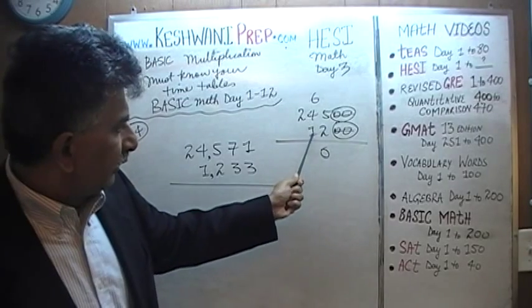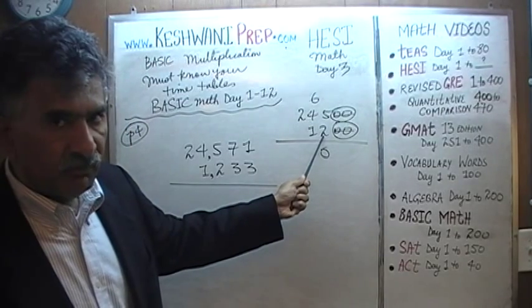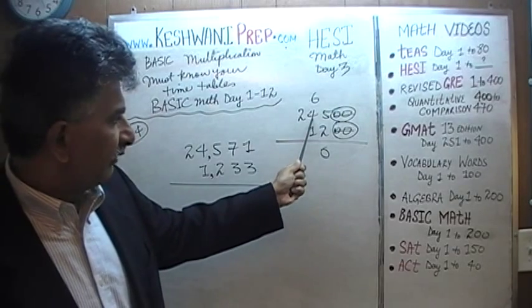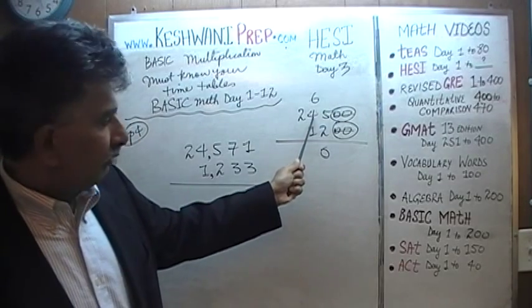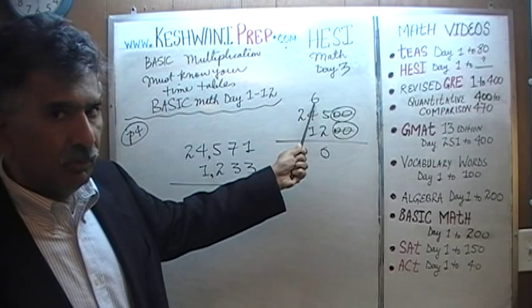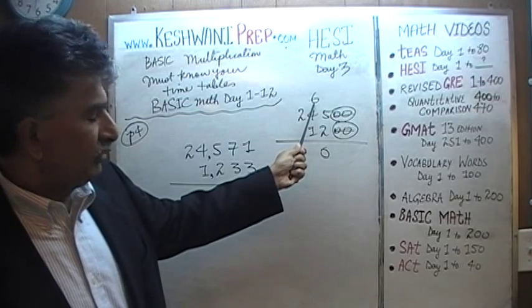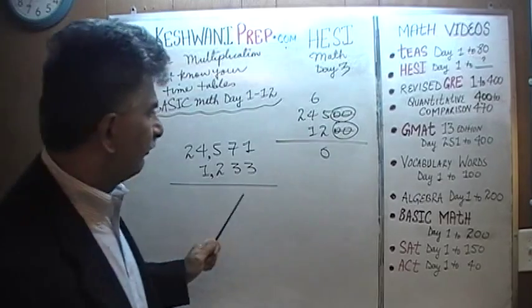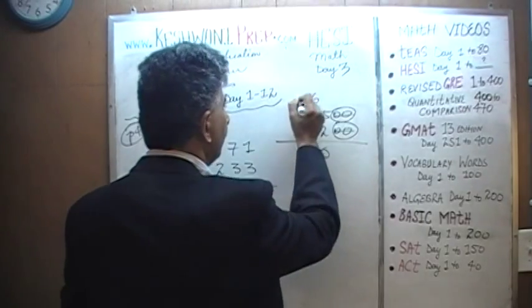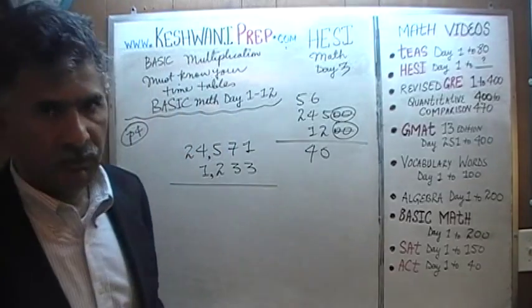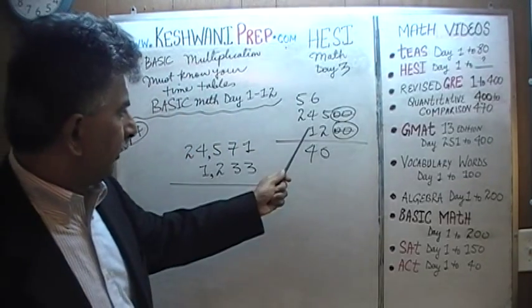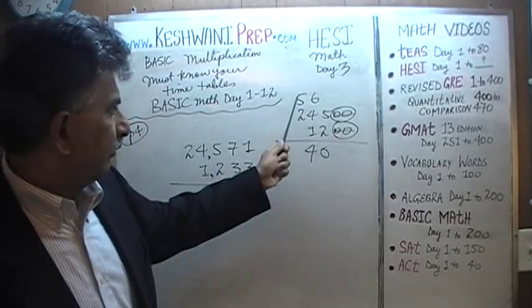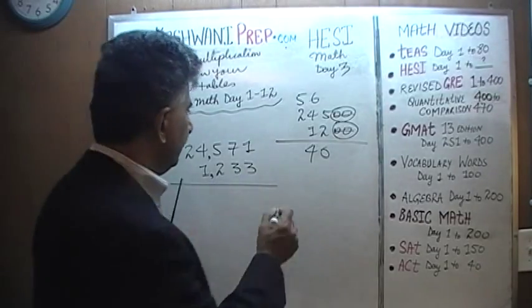12 fours are 48. 48 plus 6 is 54. That's a 4, carry 5. Then 12 times 2: 12 twos are 24, plus 5 is 29. You're done. The entire process should take no more than a few seconds.